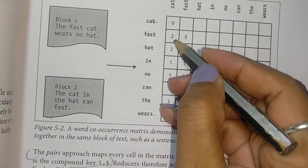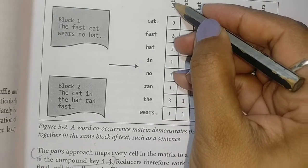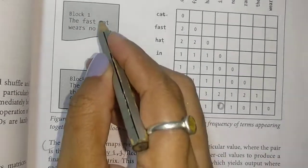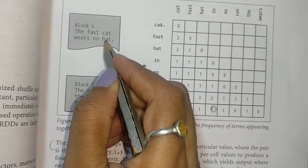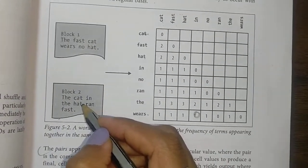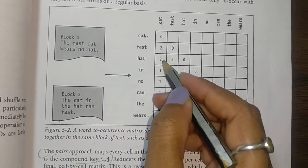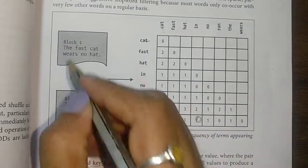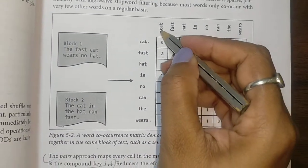Moving on, cat and hat: cat and hat occur once in this block and again once in this one, so it is written as two. It occurs twice in both sentences.